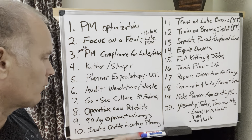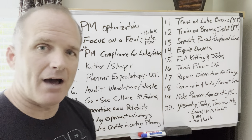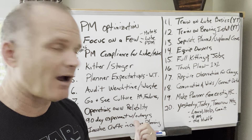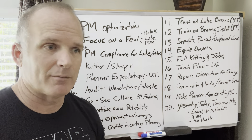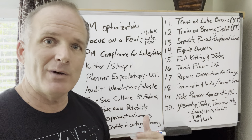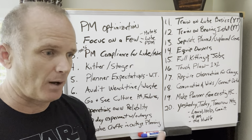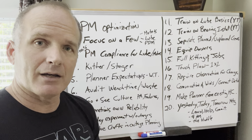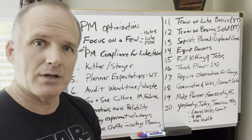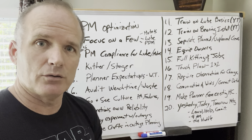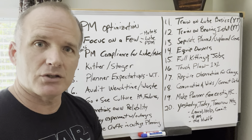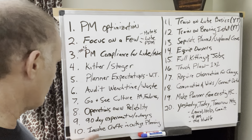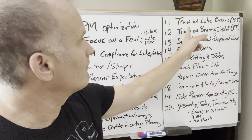Number ten: involve crafts in the outage planning. If you've got a big outage next week — one of these 18-hour ones — two weeks ahead of time, pull in a sampling of your crews and say: here's how we're going to lock and tag this, here's how we're going to do a precision job, here's how we're going to stage, here's the equipment we're going to use. Involve the crafts in that.